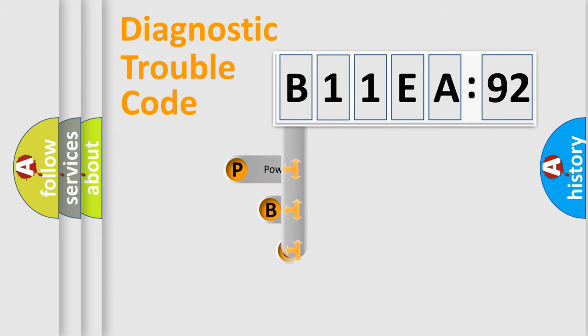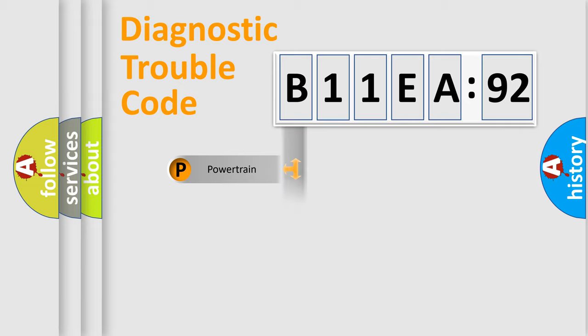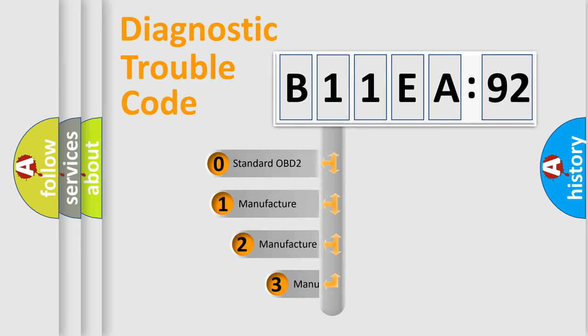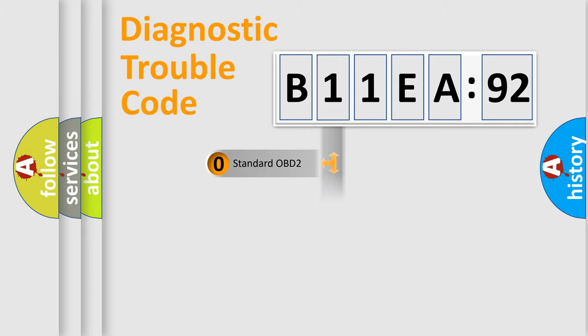This distribution is defined in the first character of the code. If the second character is expressed as zero, it is a standardized error. In the case of numbers 1, 2, or 3, it is a more manufacturer-specific expression of a car-specific error. The third character specifies a subset of errors. The distribution shown is valid only for the standardized DTC code. Only the last two characters define the specific fault of the group.